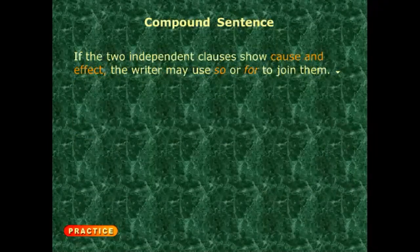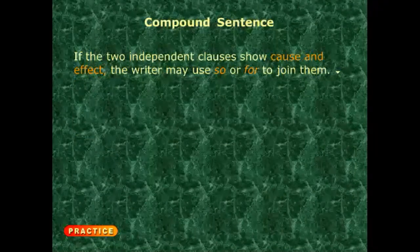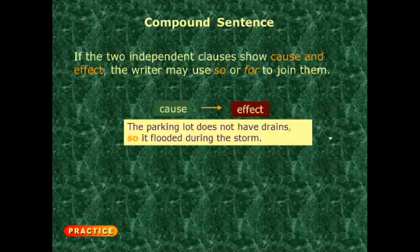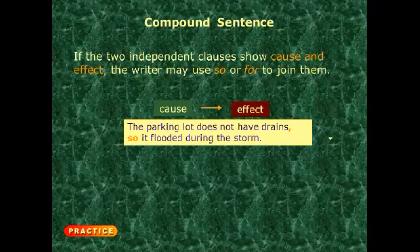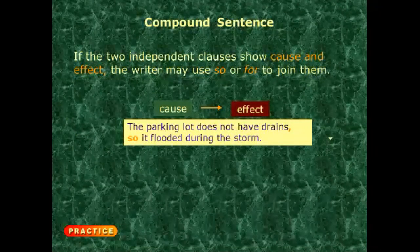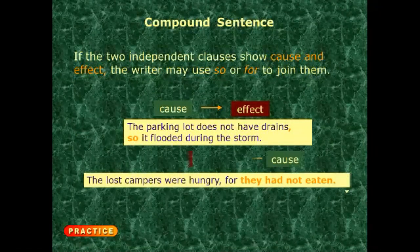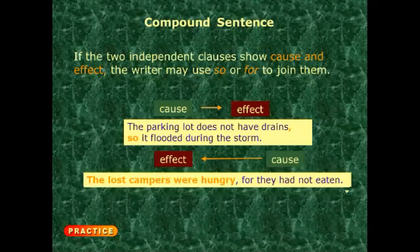For a cause-and-effect relationship between two independent clauses, use 'so' or 'for.' If the cause comes first, use 'so.' Example: 'The parking lot does not have a drain, so it floods during the storm.' If the effect comes first and the cause follows, use 'for.' Example: 'The lost campers were hungry, for they had not eaten.' Remember to place a comma before the coordinating conjunction.